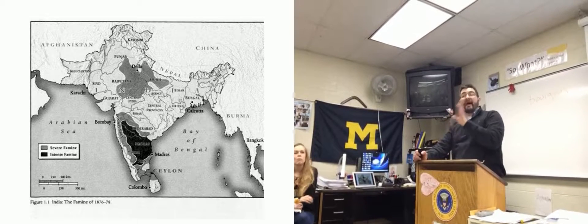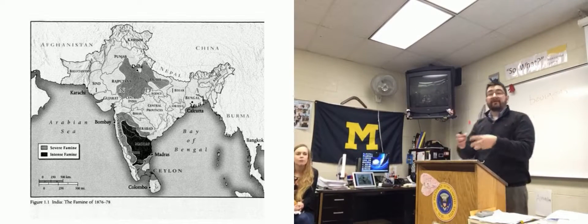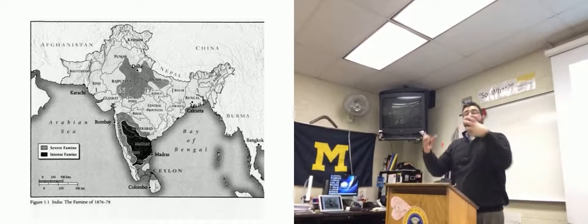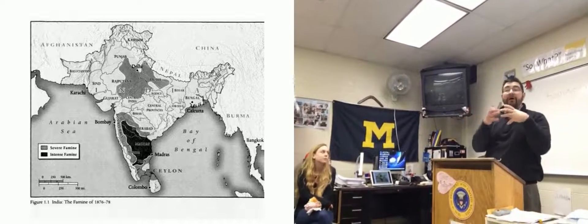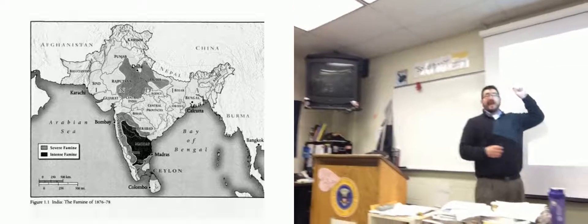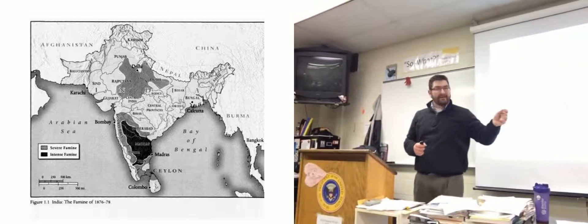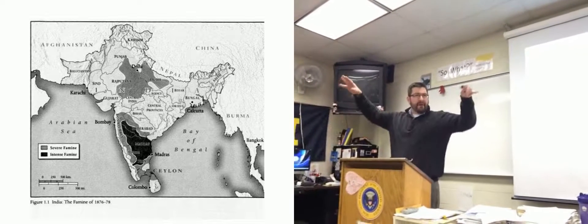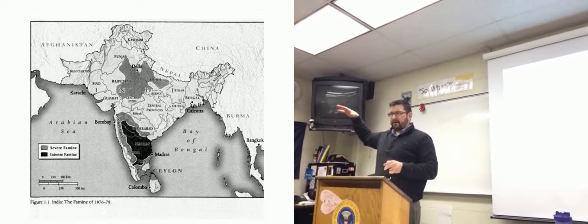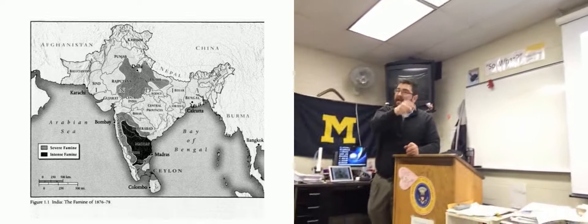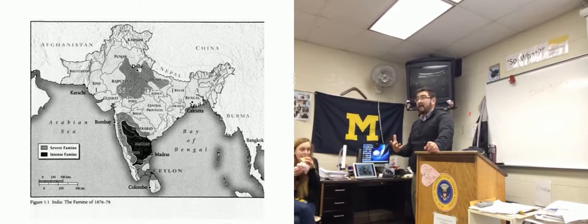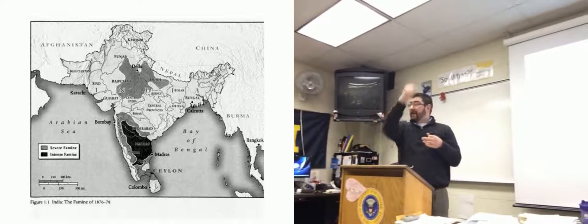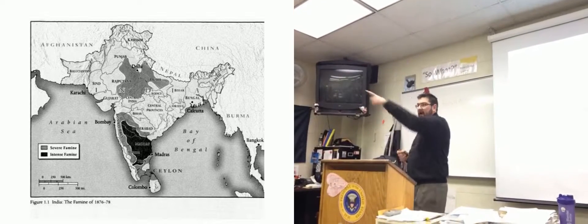People were starving to death by the millions in India, largely because of the transformation of Indian farms into cotton-producing farms rather than agricultural farms. How can a factory in England impact people in central India? This is a butterfly-effect kind of thing — stuff happening in England is impacting people in central India. That kind of global interconnection will never go away, and it begins during this era.